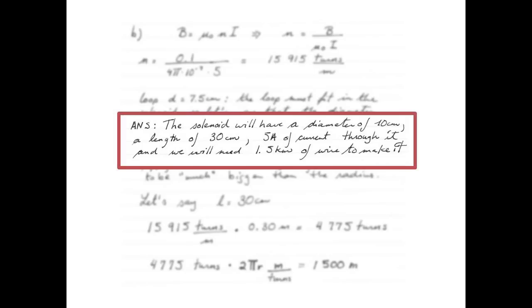My answer is that my solenoid will have a diameter of 10 centimeters, a length of 30 centimeters, 5 amperes of current going through it, and that I'll need 1 and a half kilometers of wire to make it. Now I could have also specified the wire differently. I could have mentioned the 15,915 turns per meter, or I could have said that it needed a total of 4,775 turns.